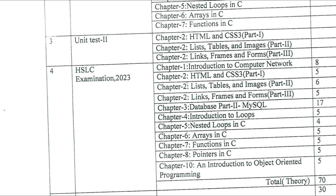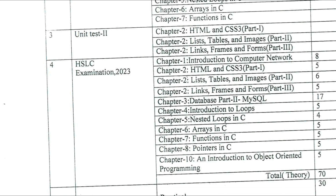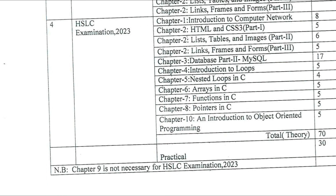For C programming topics: Loops carry 5 marks, Nested Loops 4 marks, Arrays 5 marks, Functions in C 5 marks, Pointers 5 marks, and Introduction to Object-Oriented Programming 5 marks. The theory total is 70 marks and practical is 30 marks.